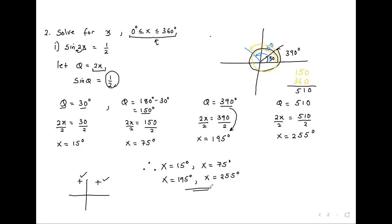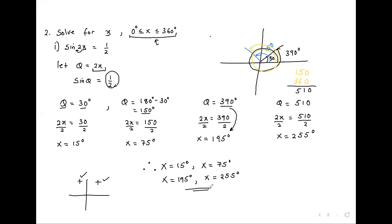Any questions? A student asks: I haven't understood clearly how you got 255. Just a quick recap: you divide 510 by 2. Where do we get 510? It's a coterminal angle of 150 — you add 150 plus 360 to get 510. When adding 150 plus 360 you are getting theta, and theta equals 2x. So 2x equals 510, and you divide by 2 to get x equals 255.